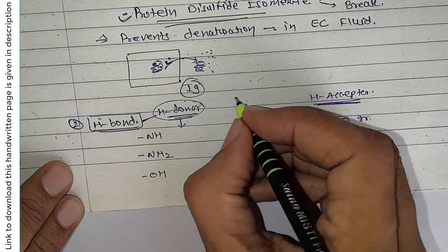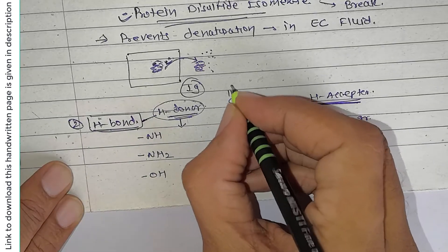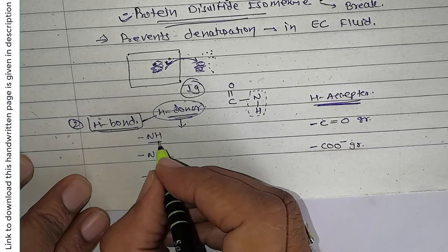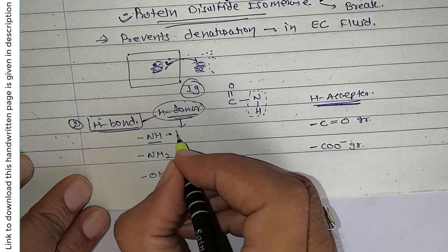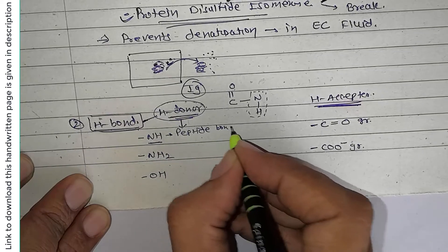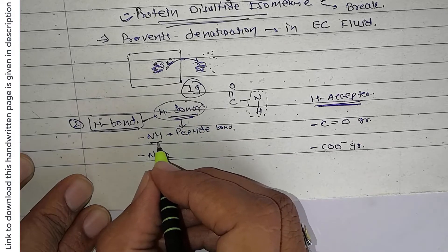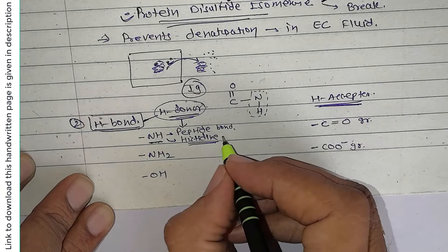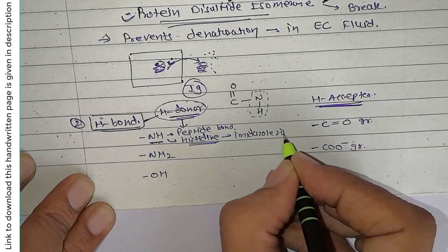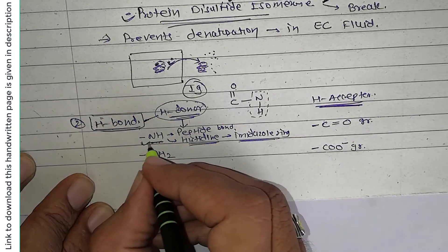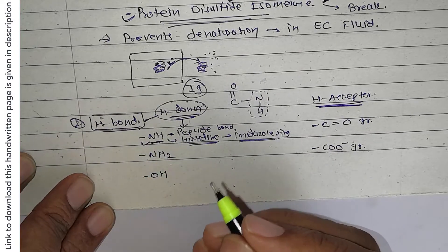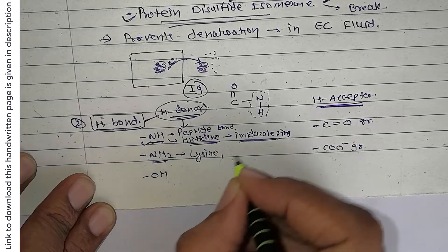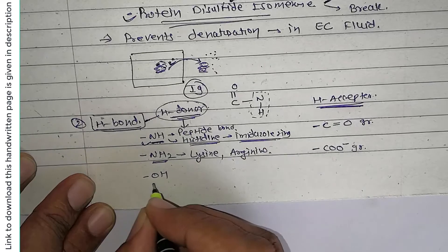Looking at the peptide bond, the NH group present in the peptide bond can act as a hydrogen bond donor. Additionally, histidine's side chain contains an imidazole ring with an NH group, which can also act as a donor. The NH2 group is found in the side chains of lysine and arginine. The OH group is found in the side chains of serine and threonine.